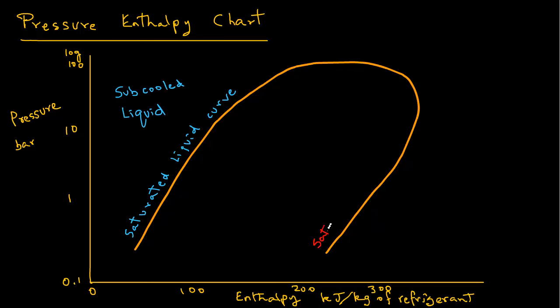The right hand curve we will label as saturated vapor curve. Any point on this right hand side curve represents that the refrigerant is in a saturated vapor state. The region on the right hand side is superheated vapors.